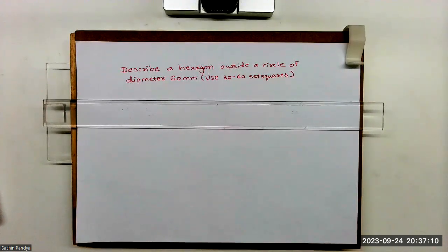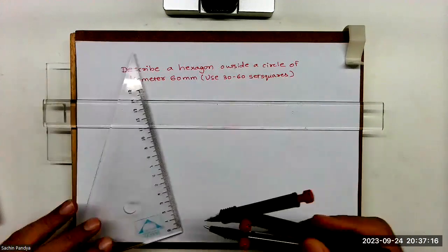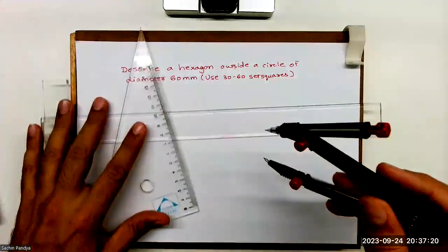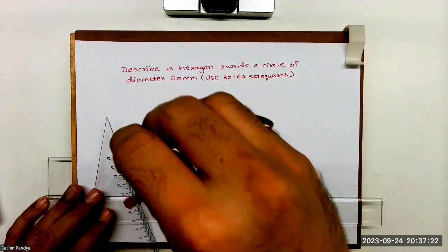Welcome to technical drawing. Today we are going to learn how to describe a hexagon outside a circle. So what we will do first, we will draw a given diameter. We will take radius 30 and we will draw a circle.